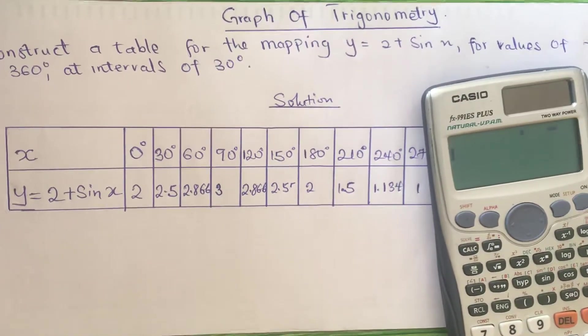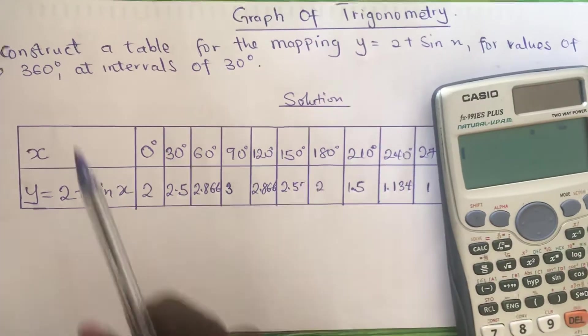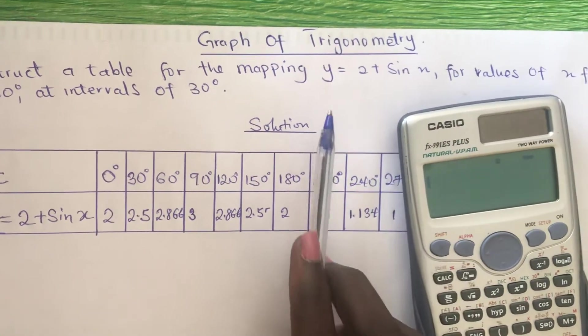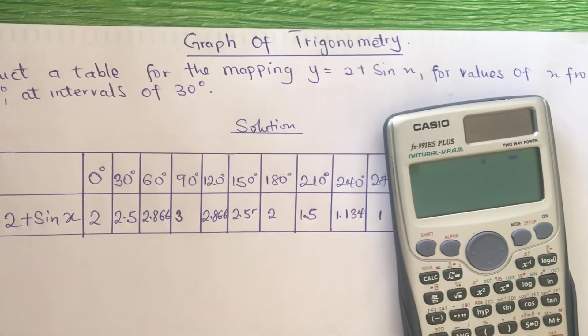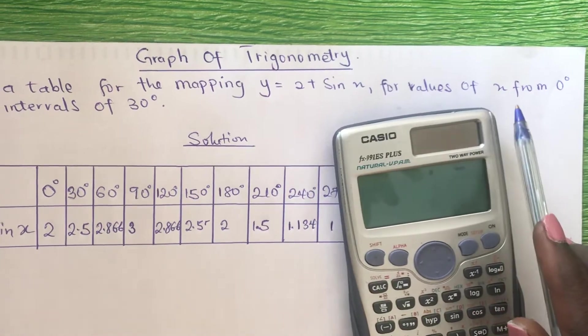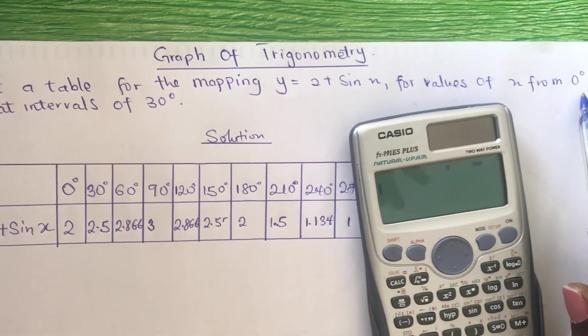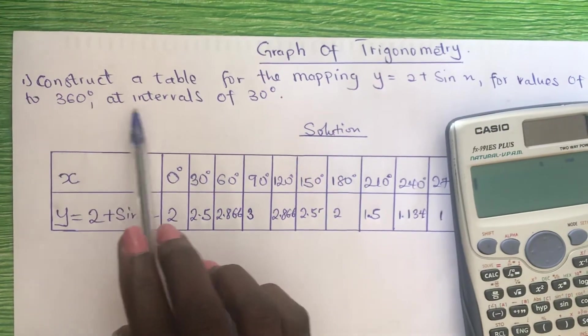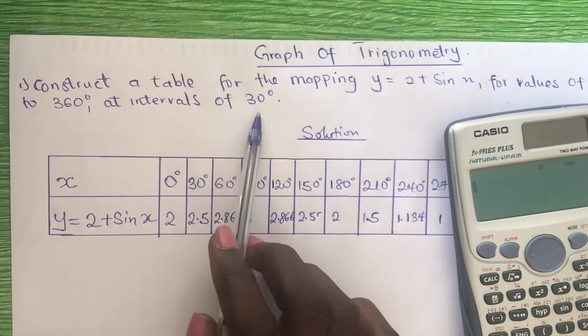The first question I have here is: construct a table for the mapping y equals 2 plus sin x, for values of x from 0 degrees to 360 degrees at intervals of 30 degrees.